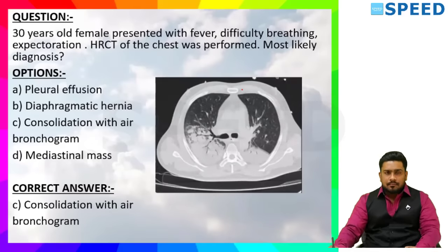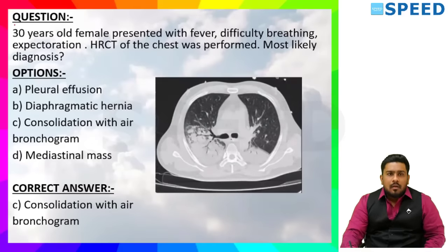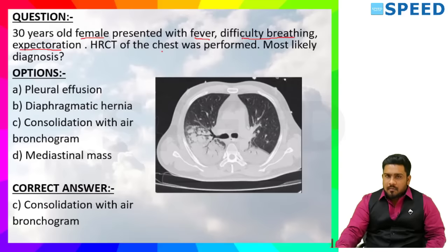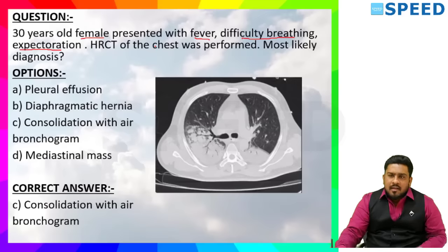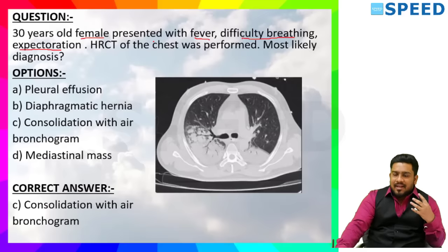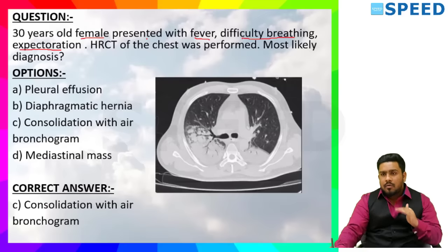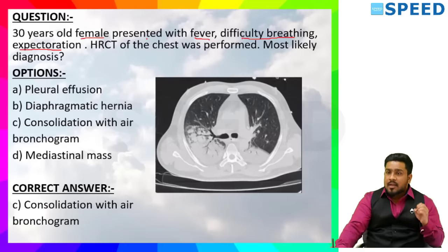Next question: A 30-year-old female presented with fever, difficulty breathing, and expectoration. HRCT of the chest was performed. Most likely diagnosis? The options are pleural effusion, diaphragmatic hernia, consolidation with air bronchogram, mediastinal mass.